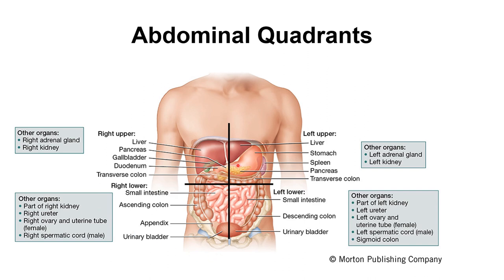It's important to know what organs are in each quadrant — for example, patients with appendicitis have pain in the right lower quadrant. The right upper quadrant contains the liver, pancreas, gallbladder, duodenum, and transverse colon. The right lower contains the appendix, small intestine, and ascending colon. The left upper has the liver, stomach, spleen, pancreas, and part of the transverse colon. The left lower contains the small intestine, descending colon, and urinary bladder.